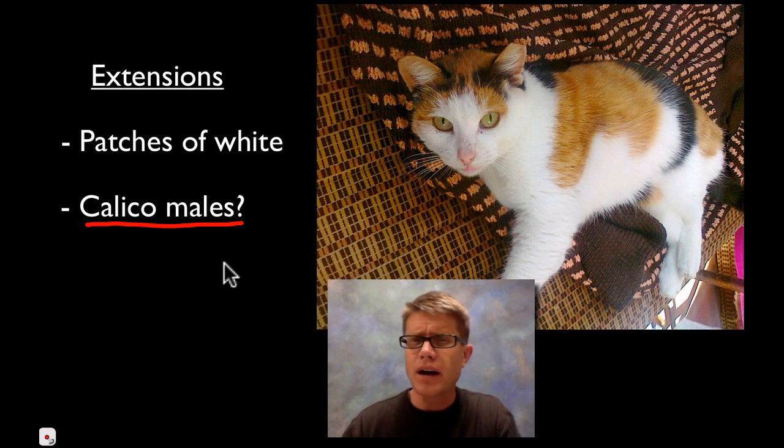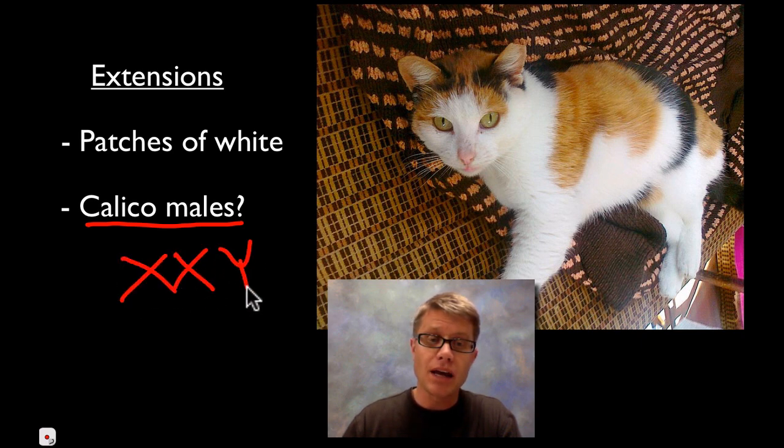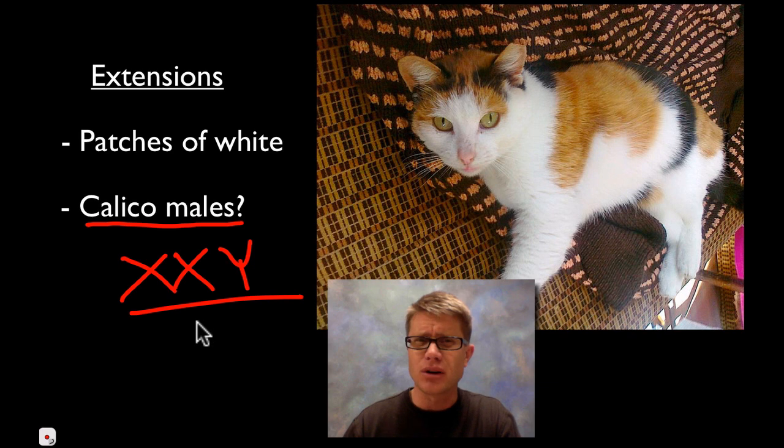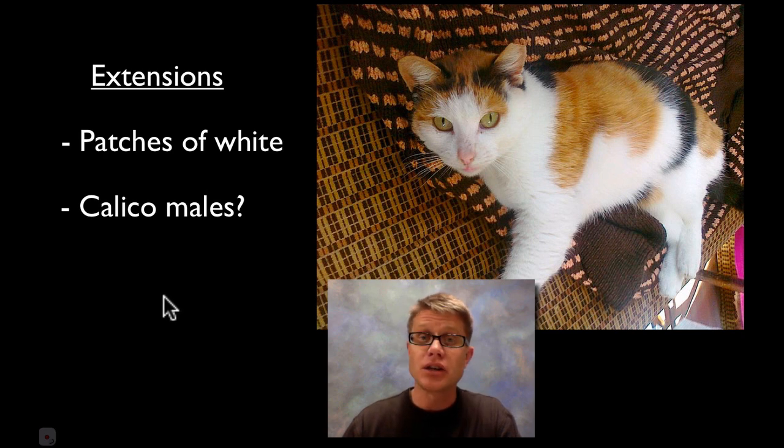Another question you should be thinking to yourself is at the beginning I said almost all calico cats that you'll ever see are going to be female. Well how could we ever have a male calico cat? It's pretty simple but maybe non-intuitive. Basically what you could get is an XXY male. And so how does that occur? Well during meiosis you could get non-disjunction of the two X chromosomes. And so basically you could get one that is of the orange, one that is of the black. And so you could have a, we call this Klinefelter syndrome in humans, but you could have a calico male. But again it's going to be incredibly rare.